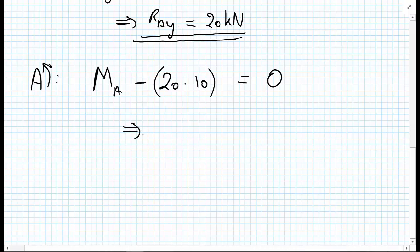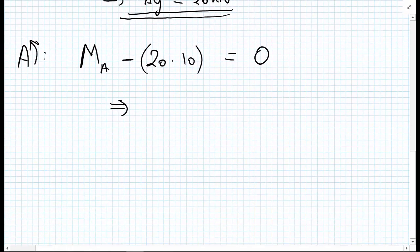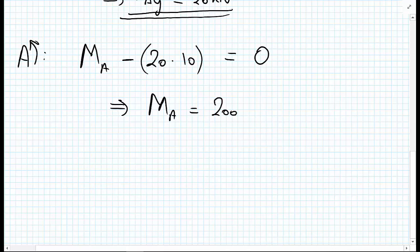And then I can take the 20 multiplied by 10 onto the right hand side, and I can write that M_A equals 200 kilonewton meters.